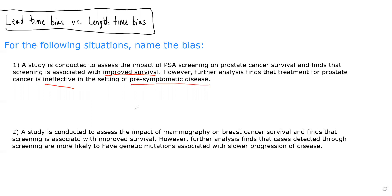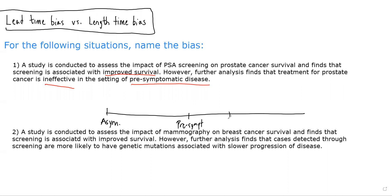So if we think of a patient's life course — where they don't have the disease, then develop pre-symptomatic disease, then symptomatic disease, and then death — we see that treatment is ineffective in the setting of pre-symptomatic disease, meaning that even if we detect somebody with pre-symptomatic disease, which can be done with a screening test, we're not going to be able to actually change this progression from pre-symptomatic disease to symptomatic disease.